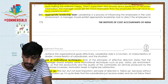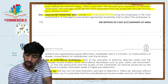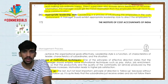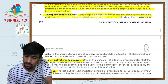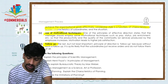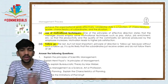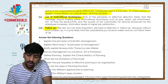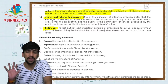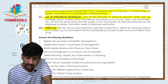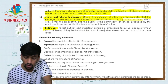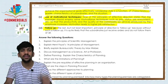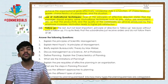Appropriate leadership — leadership is a process of influencing employees in the work environment. A manager should exhibit the appropriate leadership style to enable employees to achieve organizational goals. Leadership style is a function of the characteristics of the leader, characteristics of subordinates, and the situation. The manager should choose the best leadership style — autocratic, participative, laissez-faire, and others — whichever best suits the organization. The manager should also use motivational techniques such as pay, status, and promotion so that productivity and quality increase, leading to higher job satisfaction.